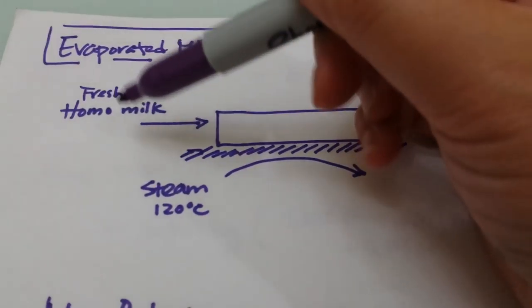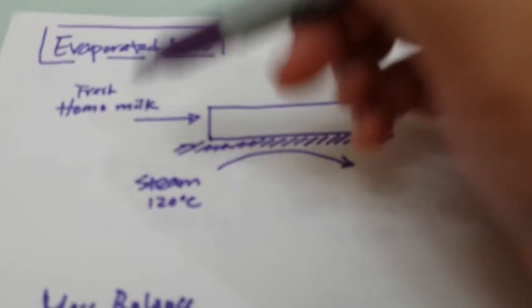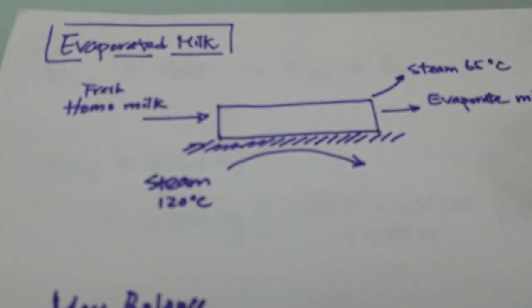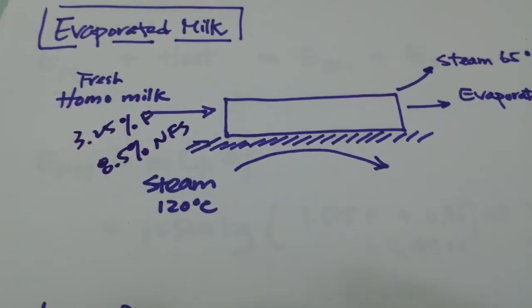We are starting with fresh milk with regular fat content, that is 3.25 percent fat and then 8.5 percent non-fat solid, and the rest of it will be just water.